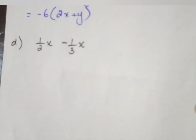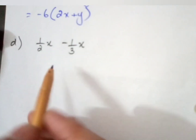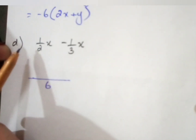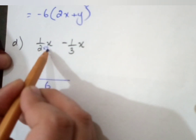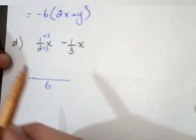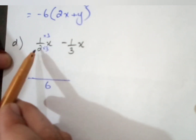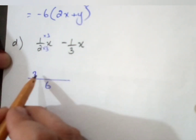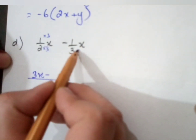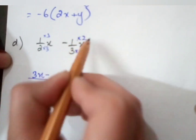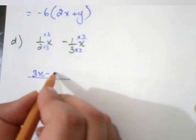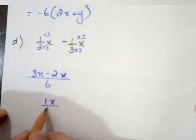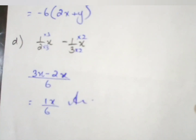In Part D we have two fraction terms. First we take the LCM of 2 and 3, which is 6. To make the denominator 2 become 6, we multiply by 3 — so multiply the numerator of that fraction by 3 as well: 3 times 1 equals 3, write the variable. The next sign is minus. To make denominator 3 become 6, multiply by 2 — multiply the numerator also by 2: 2 times 1 equals 2, write the variable x. So 3 minus 2 equals 1, giving the answer x over 6.